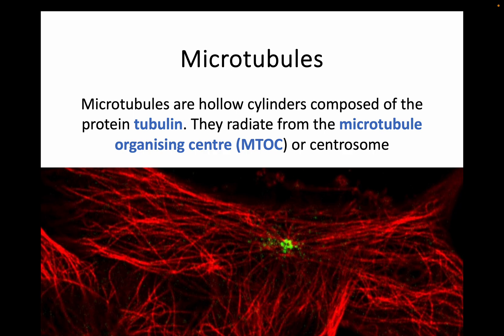In terms of those microtubules, they are hollow cylinders made up of a protein called tubulin — so tubulin microtubules, probably quite an easy way to remember them. They radiate from areas called the microtubule organising centre, but you'll probably see it referred to as MTOC. They can also come from a centrosome as well. In this picture here, there's a little MTOC in green and these different microtubules are all radiating out. Think of your spindle fibres coming out and then going back in — this is essentially the process we're looking at.